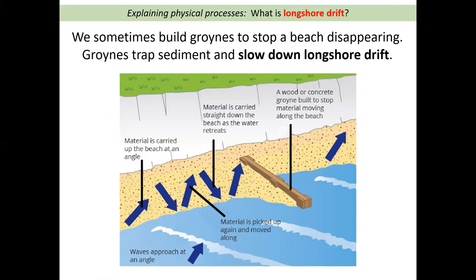Sometimes we don't want longshore drift to happen, because if the sand continues to move down the beach, this area will eventually lose its beach and all the sand will disappear. So sometimes we build something called a groyne — a wooden post that goes into the sea — to trap the sediment and stop it from getting past. In this example, we can see the zigzag movement of sand going along the beach. Without the groyne, the sand would continue moving and the beach here would probably disappear. But because a groyne has been built, the sand gets trapped behind it and can't get past, protecting the beach so it won't get smaller.